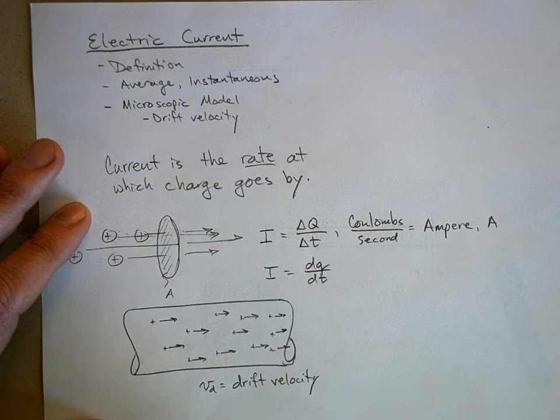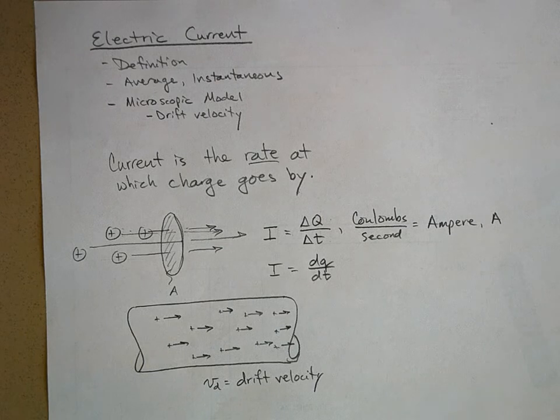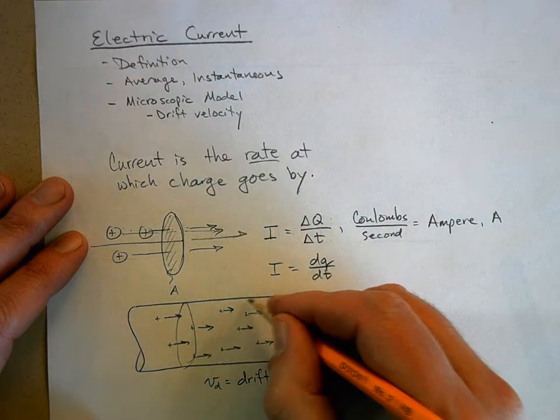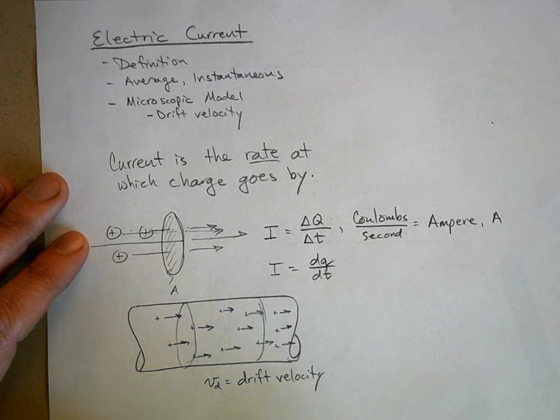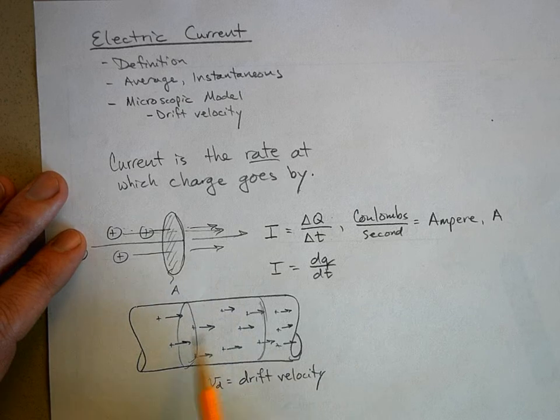Wait, is it the average velocity of all of them over time, or is it just the average velocity of all of them at one instant? Let's just say they're moving with a constant velocity to the right, okay? They're just marching to the right like ants at a constant velocity we're calling the drift velocity.